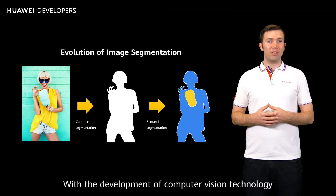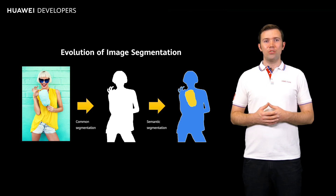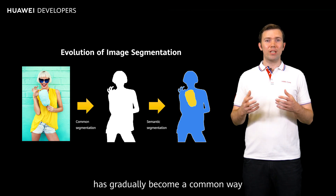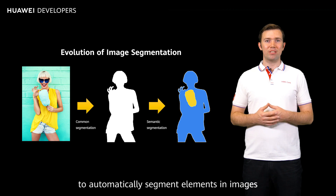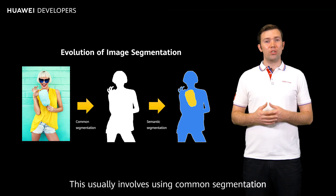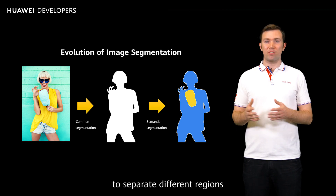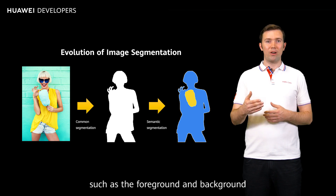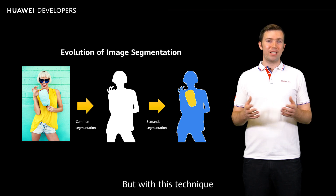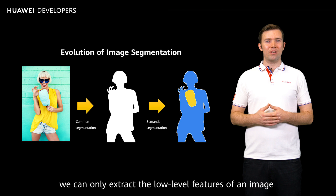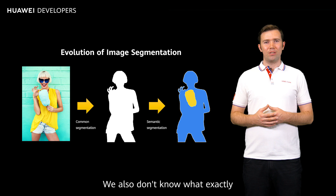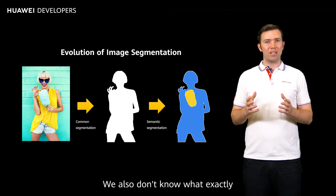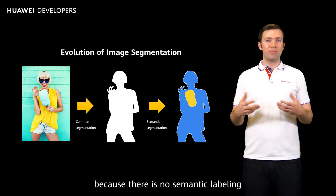With the development of computer vision technology, neural network-based segmentation has gradually become a common way to automatically segment elements in images. This usually involves using common segmentation to separate different regions, such as the foreground and background. But with this technique, we can only extract the low-level features of an image based on the image's color and texture, and we don't know what exactly each segment is because there is no semantic labeling.